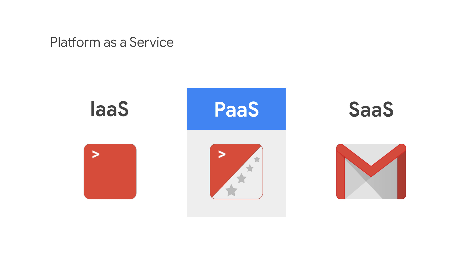Platform as a Service, PaaS, provides a platform with managed services where runtime environment and network settings are pre-configured. This makes it easier for you to develop and deploy your application. Google App Engine is an example of Platform as a Service. Google App Engine comes pre-configured with runtimes for Java, Python, Node, and more. Software upgrades and patches are automatically applied. Load balancing is also pre-configured. This enables the developer to focus on the application logic only instead of worrying about infrastructure setup.